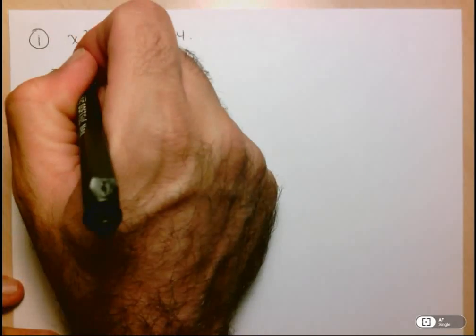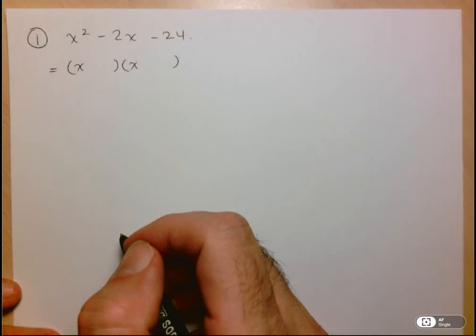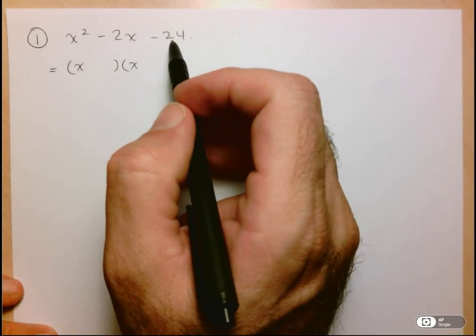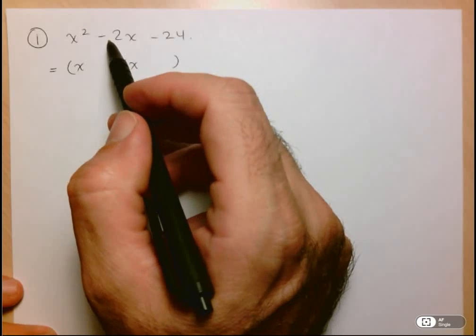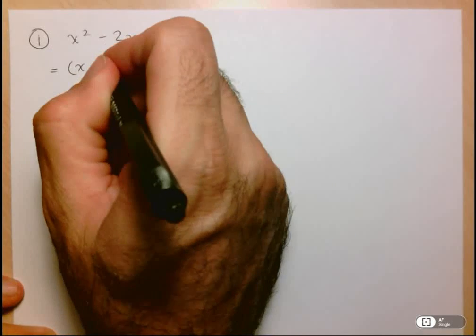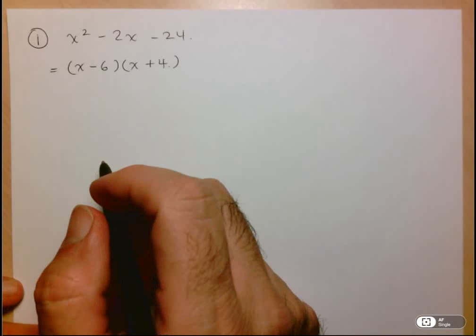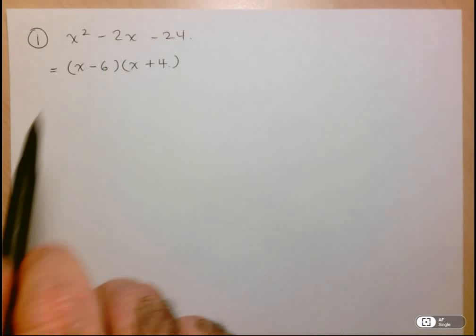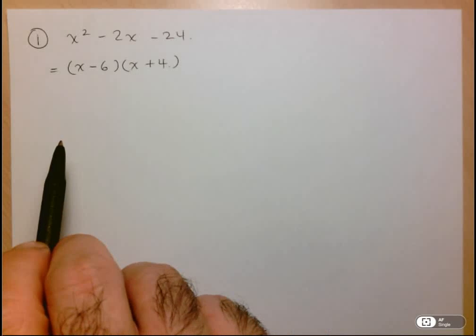So we know that we're going to be working with 6 and 4. This will factor to two binomials, each with x in the first position. Since it has to multiply to negative 24, the signs must be different. And to add up to negative 2, we need the 6 to be negative and the 4 to be positive. Now what's great about factoring is you can always check your answer by multiplying it out and making sure that it is equal to the original expression.